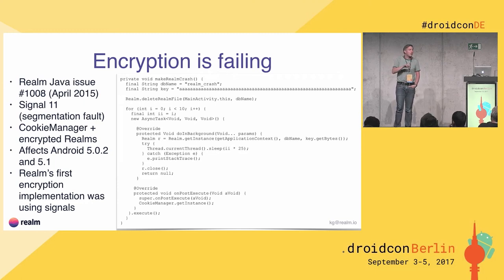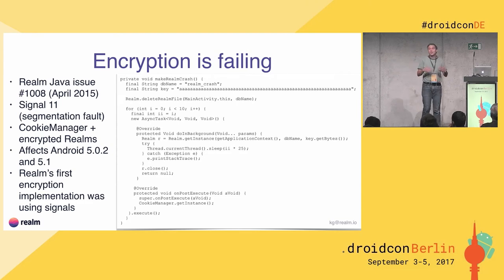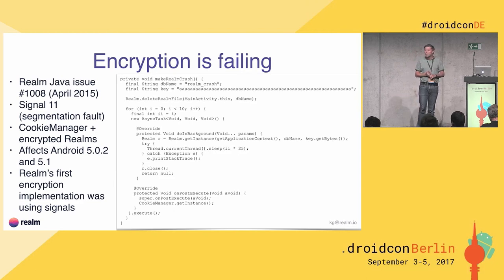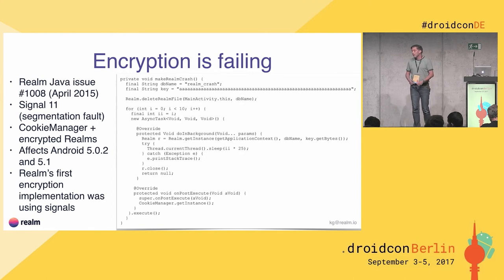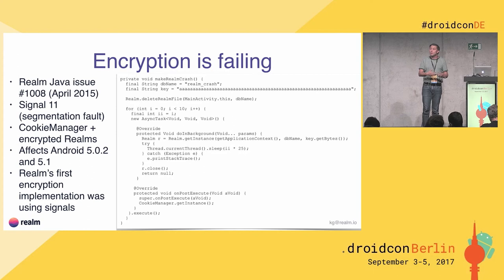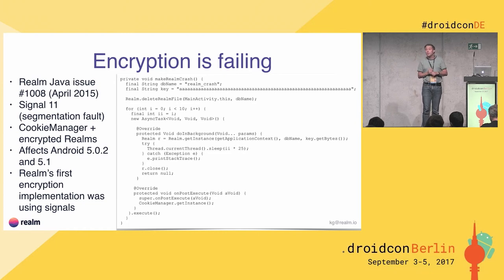Then we realized, after digging in closely, that it was related to using Signals. Signals is a very old technology in Unix — and Android is basically Unix. A process can send a signal to another process, or internally within the same process. When we were trying to access something encrypted, we would get a page fault — a signal from the OS that we were accessing that page. We had a signal handler that would then decrypt it, or if we were writing, encrypt it. So we were relying on signal handlers to do the encryption — a very smart way of doing it.